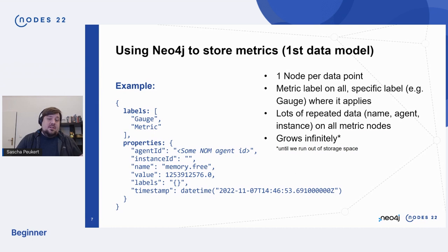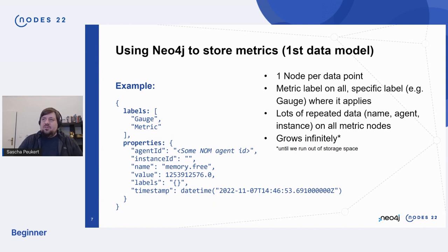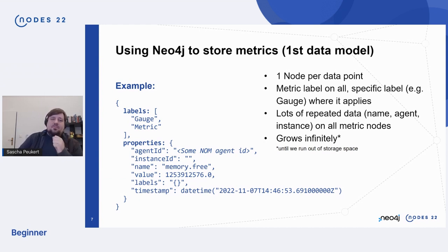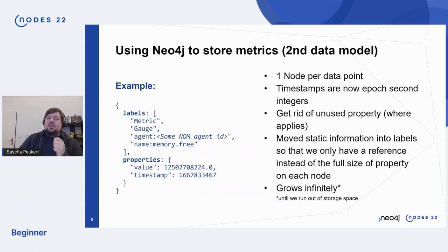The real problem is obviously this grows indefinitely. Just pumping out new metrics like this means you will run out of storage space at some point. So you have to optimize for that a bit. You have to clean up old metric data at some point or roll them into aggregated ones. So we thought maybe we can improve this — and we did. We just recently worked on improving this.